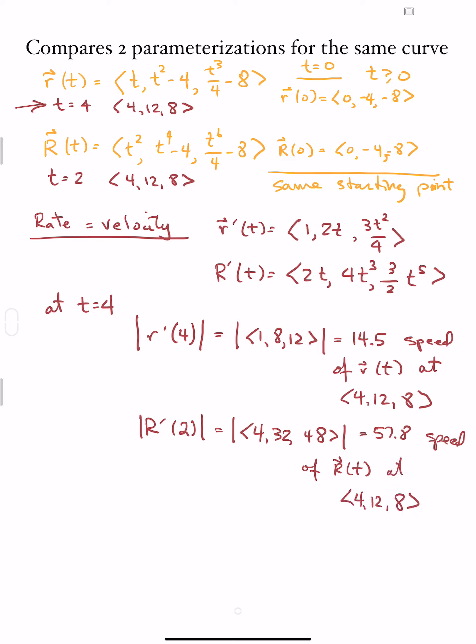We can start to compare and look at different parameterizations. We decided that these are starting at the same point, they reach many of the same points in space, but they get there at different speeds. That's what's going to become important: being able to compute the speeds of different vectors and determining where they are in space.